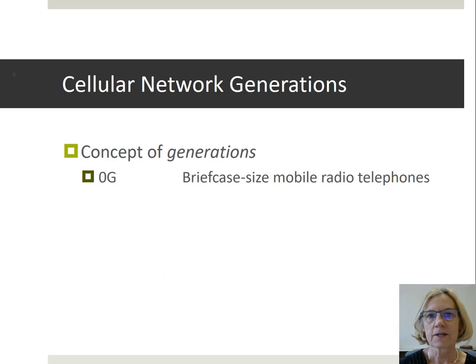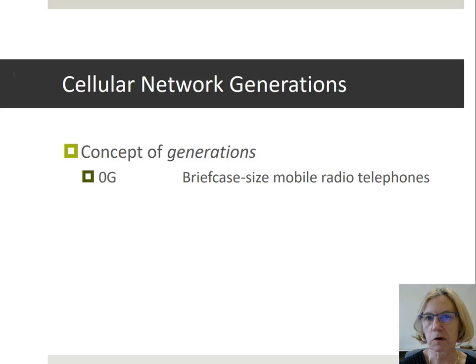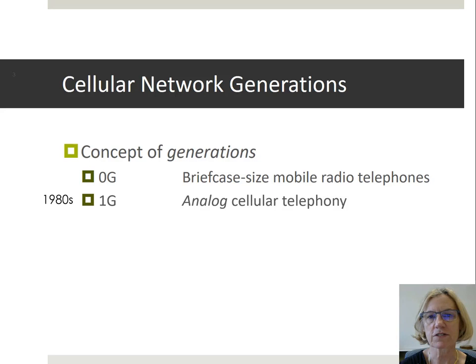Let's go back a little bit in time and talk about cellular networks in terms of generations. The zero generation was the first mobile radio — briefcase-sized devices, very few and far between, limited to military and very high corporate applications, not for the masses. In the 1980s, the first generation of cellular networks emerged; these were analog, and the only service provided was voice.